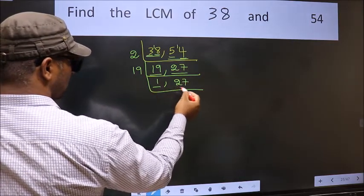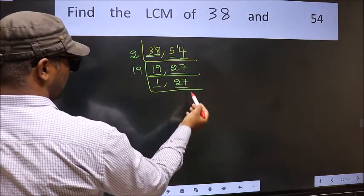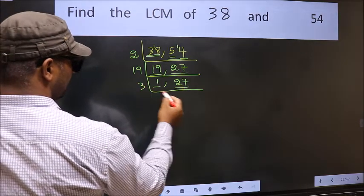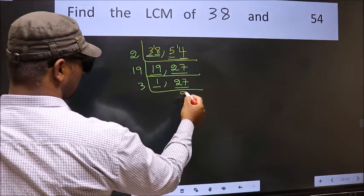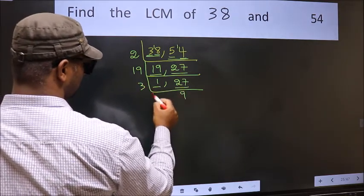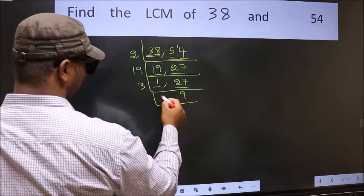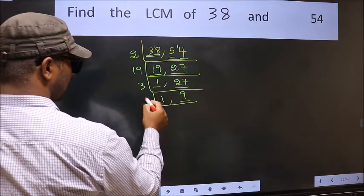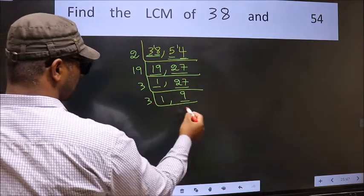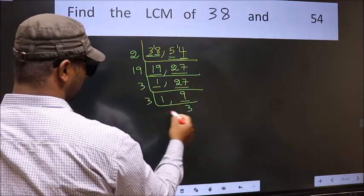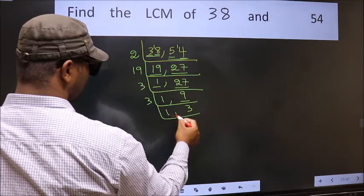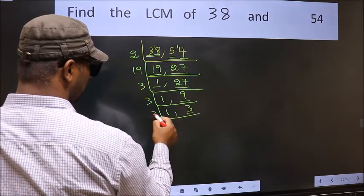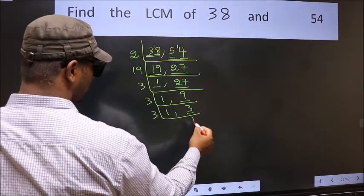So focus on the other number, 27. 27 is 3 nines — 27. Now we have 9. 9 is 3 threes — 9. Now we have 3; 3 is a prime number, so 3 ones are 3.